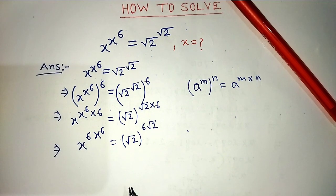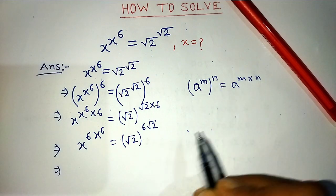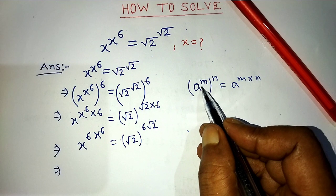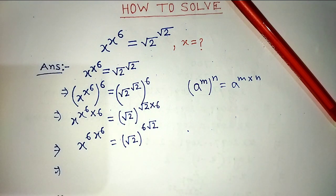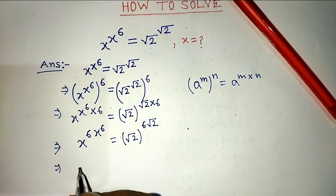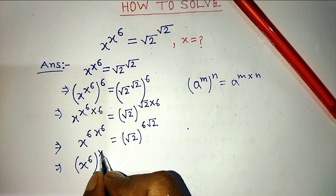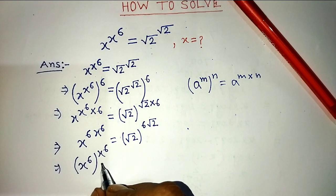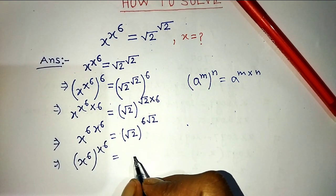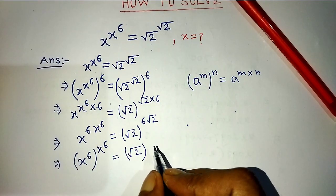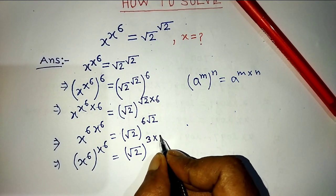After that, we apply this formula again: a to the power m into n equals a to the power m, whole to the power n. We apply this formula again on both sides. On the left hand side, we write x to the power 6, whole to the power x to the power 6.